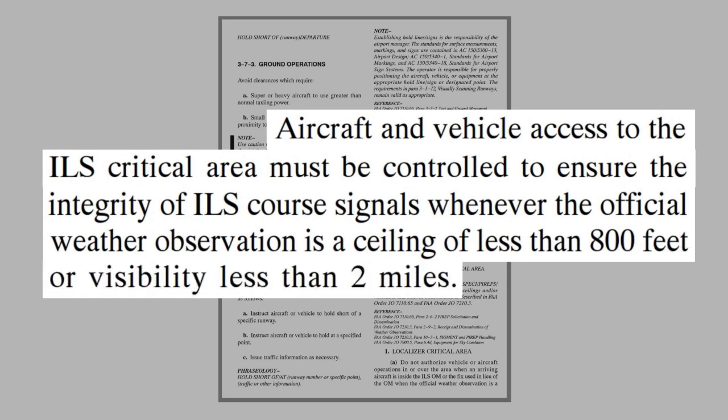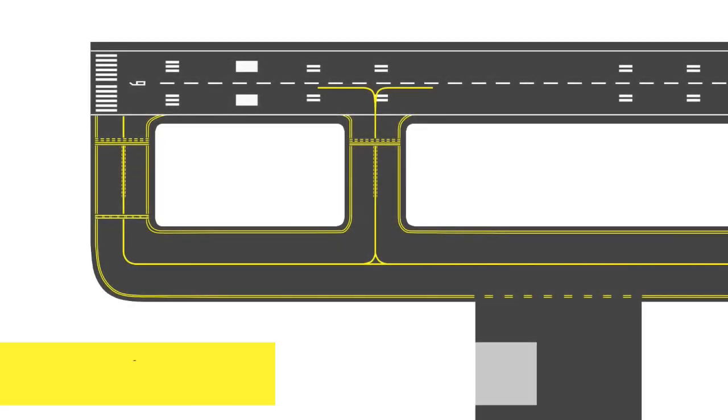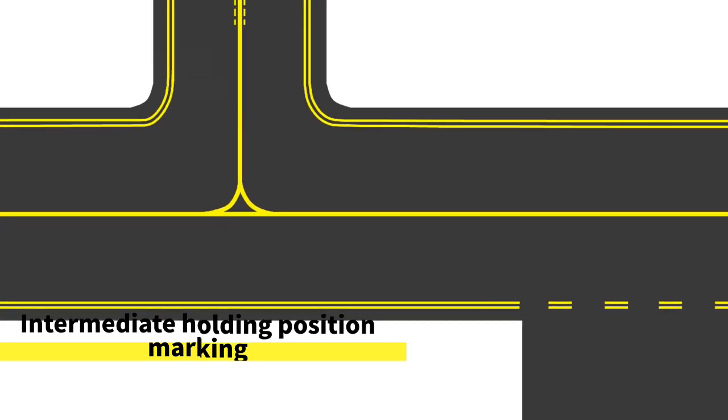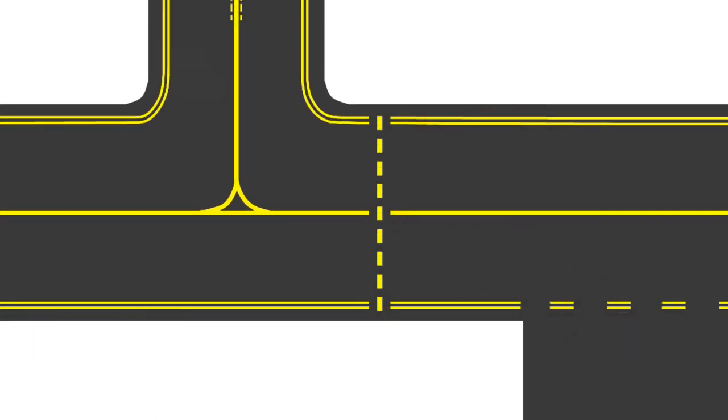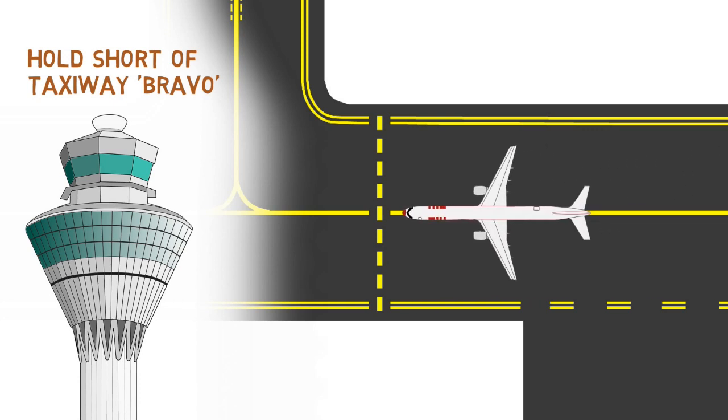Intermediate holding position markings consist of a single dashed line extending across the width of the taxiway. This marking is used to support the operational need by the control tower to manage taxiing aircraft. When instructed by ATC hold short of taxiway Bravo, the pilot must stop so that no part of the aircraft extends beyond the holding position marking.